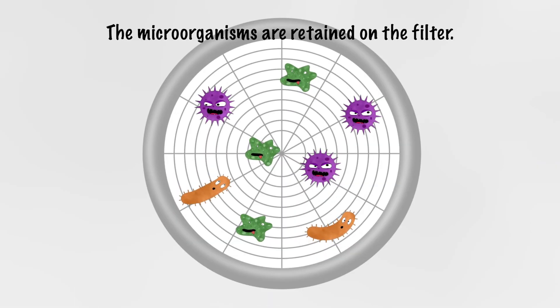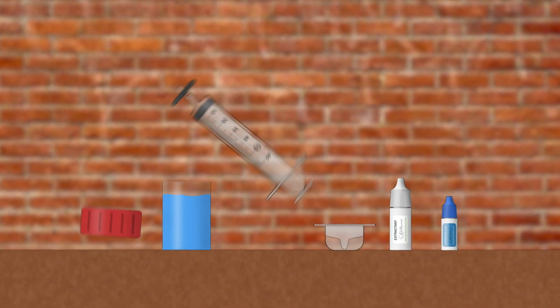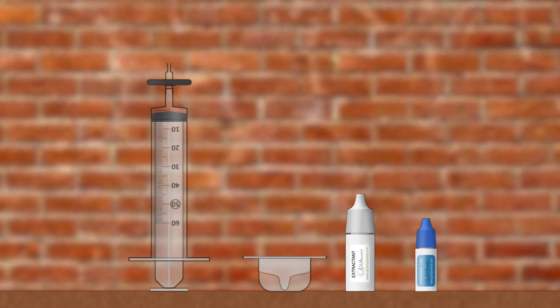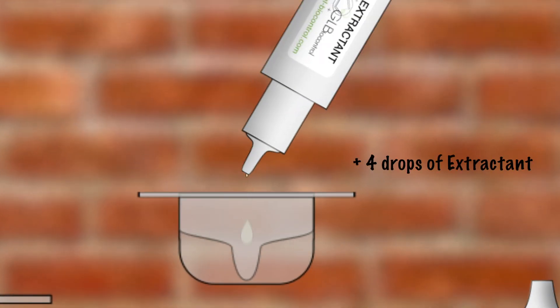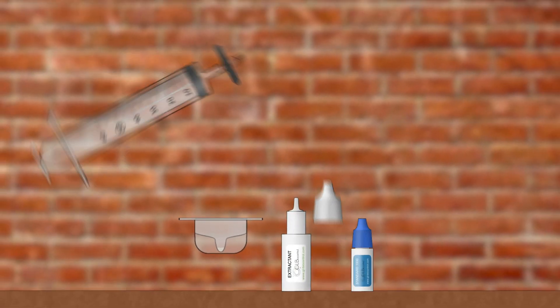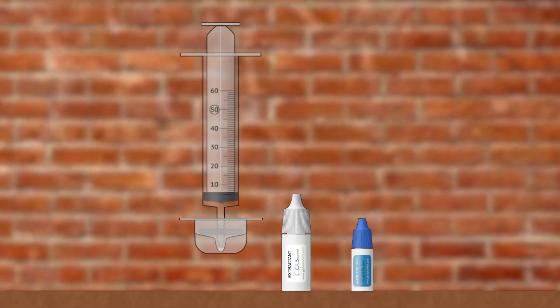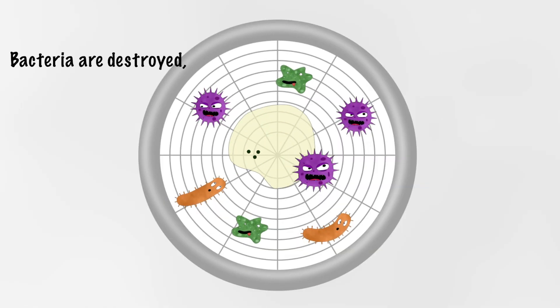The microorganisms are retained on the filter. We add 4 drops of extractant solution, then we back flush the membrane. This solution triggers cell destruction and liberates ATP.